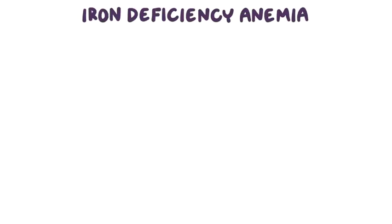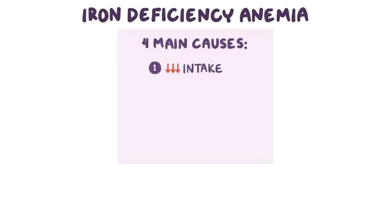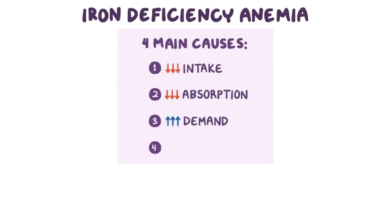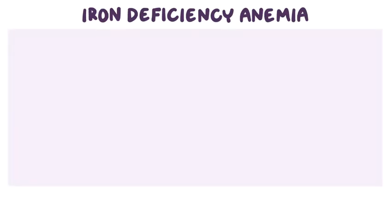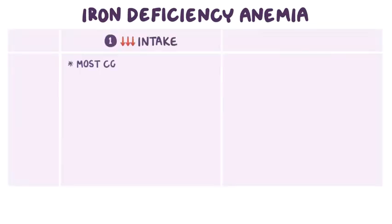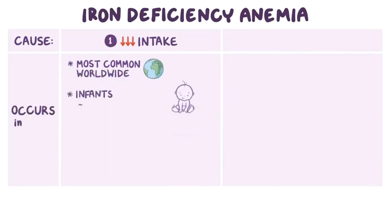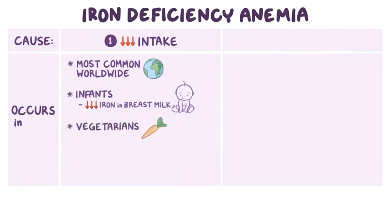Iron deficiency anemia can develop as a result of four main causes: decreased intake, decreased absorption, increased demand, and increased loss. Decreased intake is the most common cause of iron deficiency anemia worldwide, and it occurs in infants because breast milk is surprisingly low in iron. It also occurs in vegetarians, whose iron intake is mostly non-heme iron, which is harder to absorb.